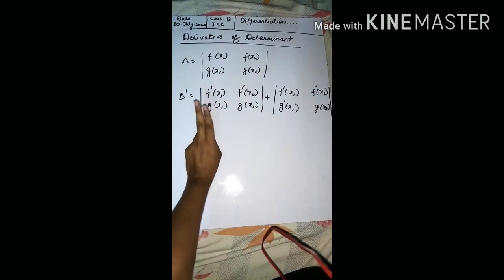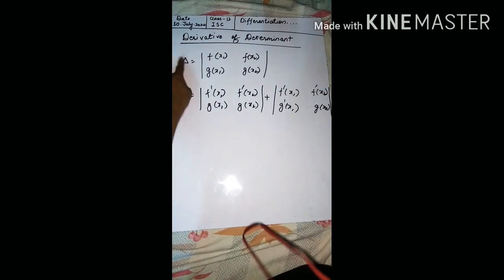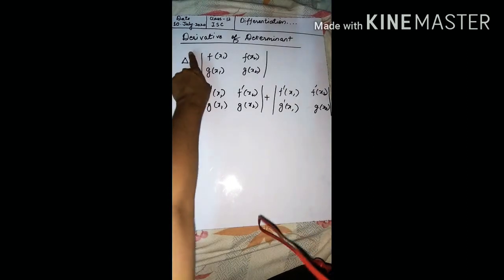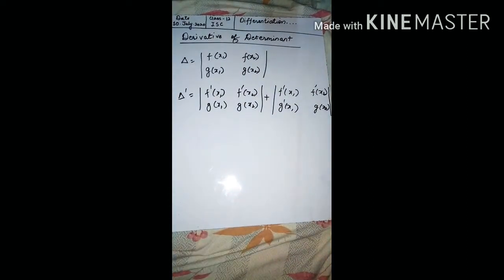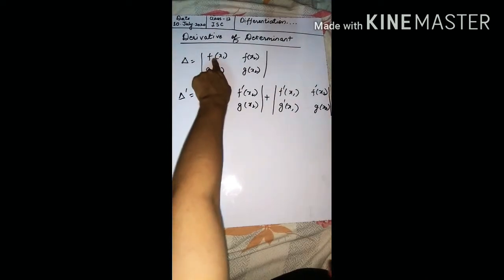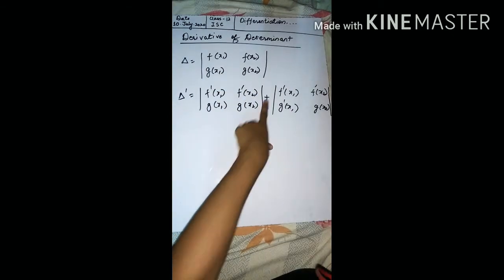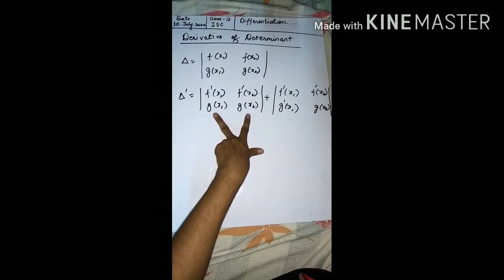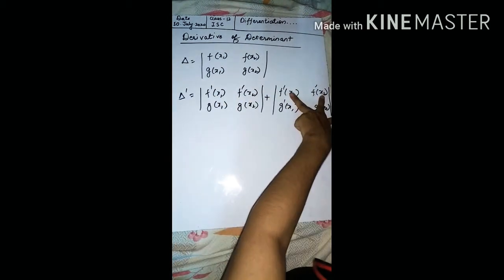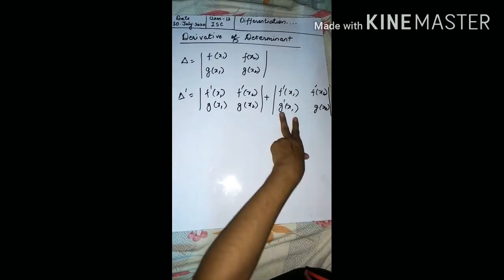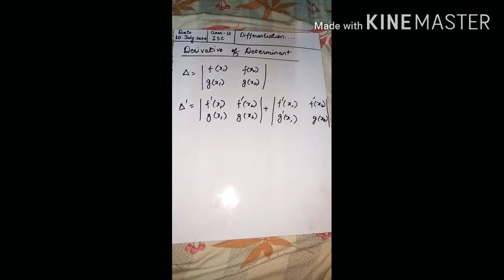How do we differentiate it? Differentiating both sides with respect to x, delta-dash equals — we differentiate row-wise. So this will be: f-dash(x1), f-dash(x2) — these two will remain the same — plus keep the first row as it is, and in the second row g-dash(x1) and g-dash(x2). I forgot to put the dash there.